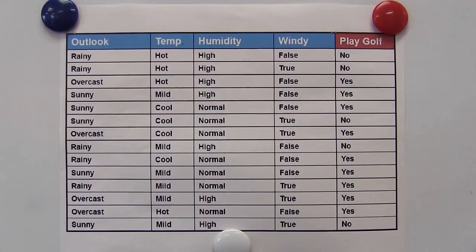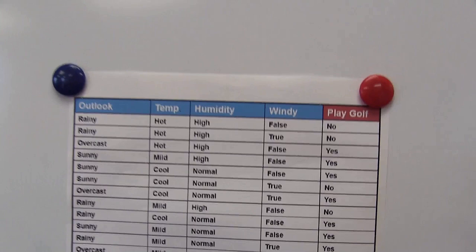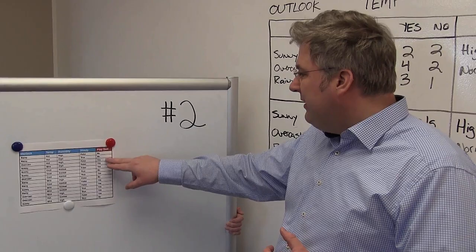Almost as famous as the iris data set. So we have a couple of columns here: outlook, temperature, humidity, windy. And then this is the label — this is what we want to predict. The question: are you going to play golf, yes or no? So that's the data set.